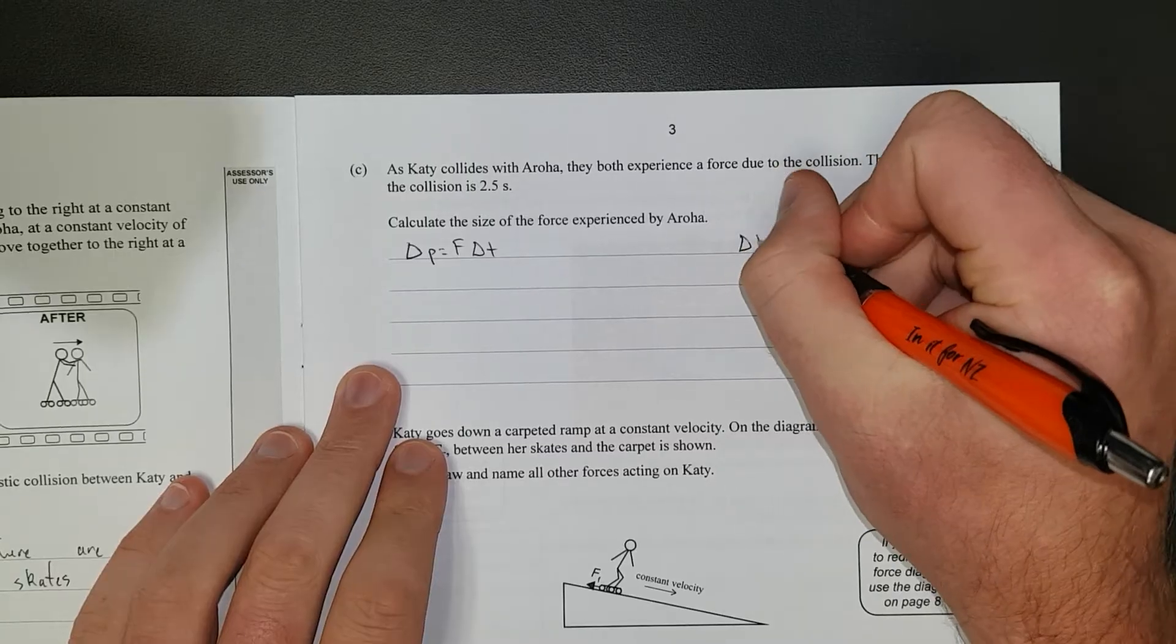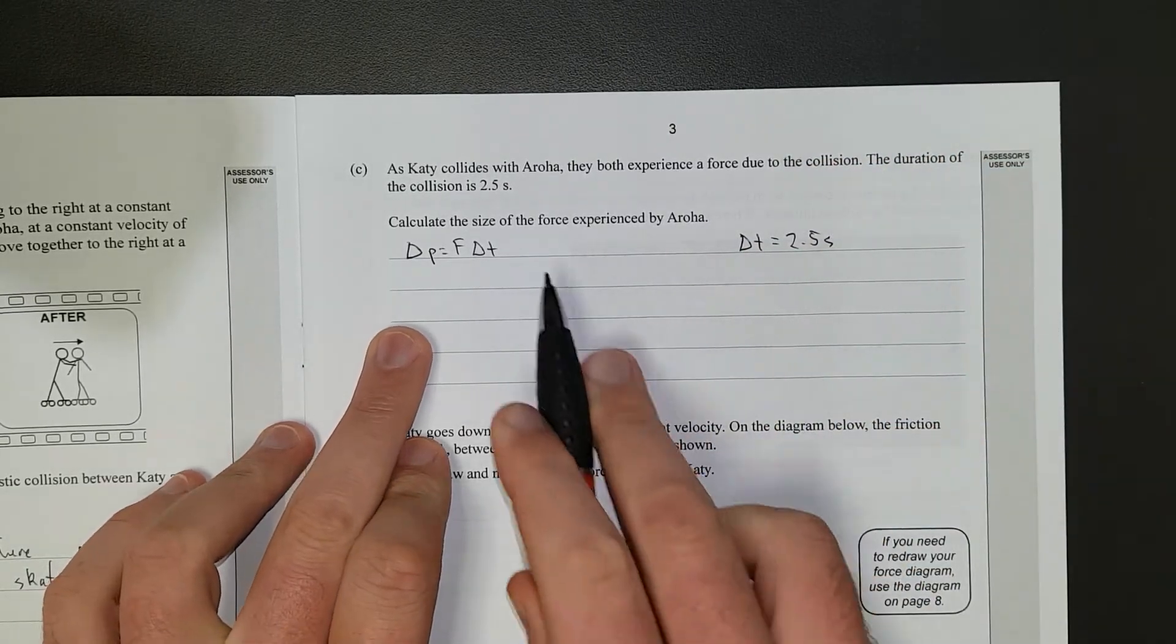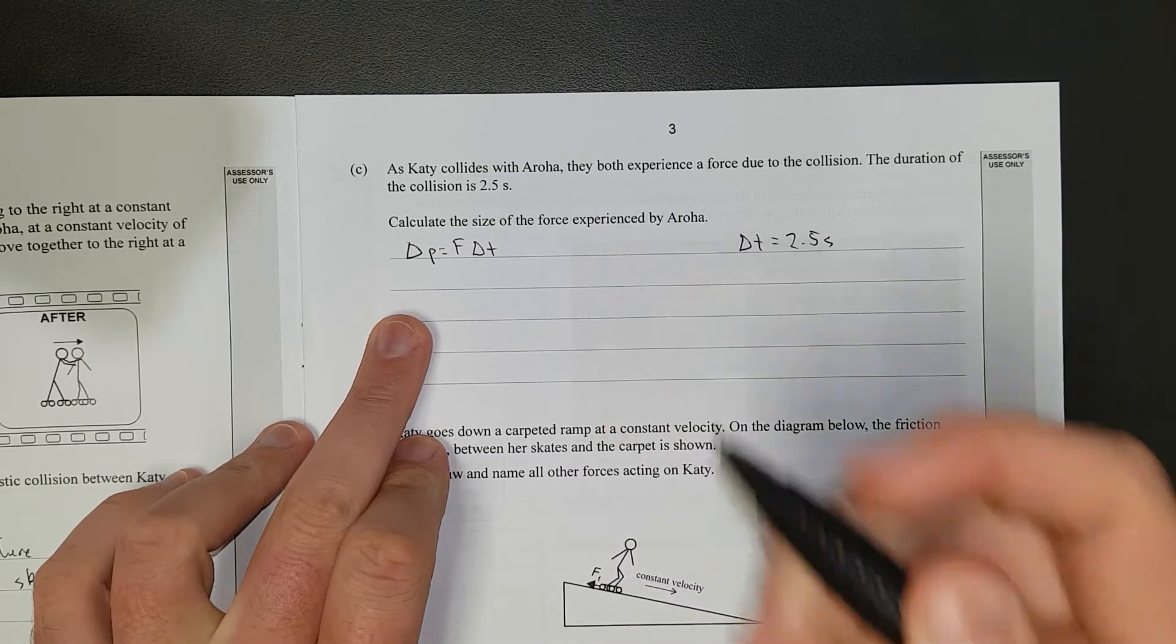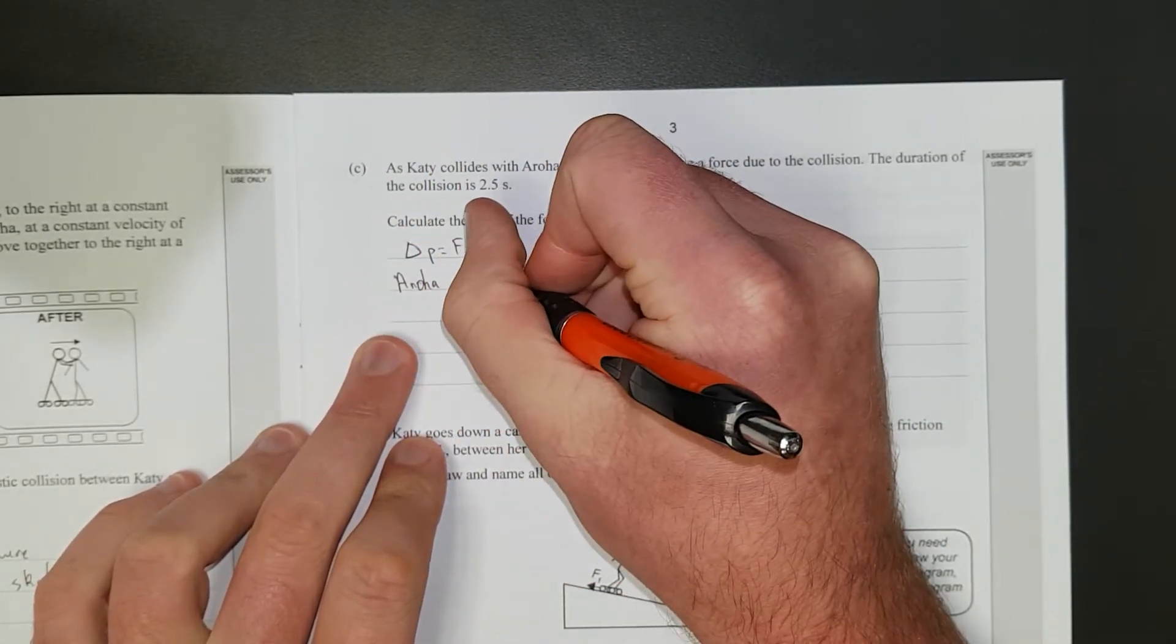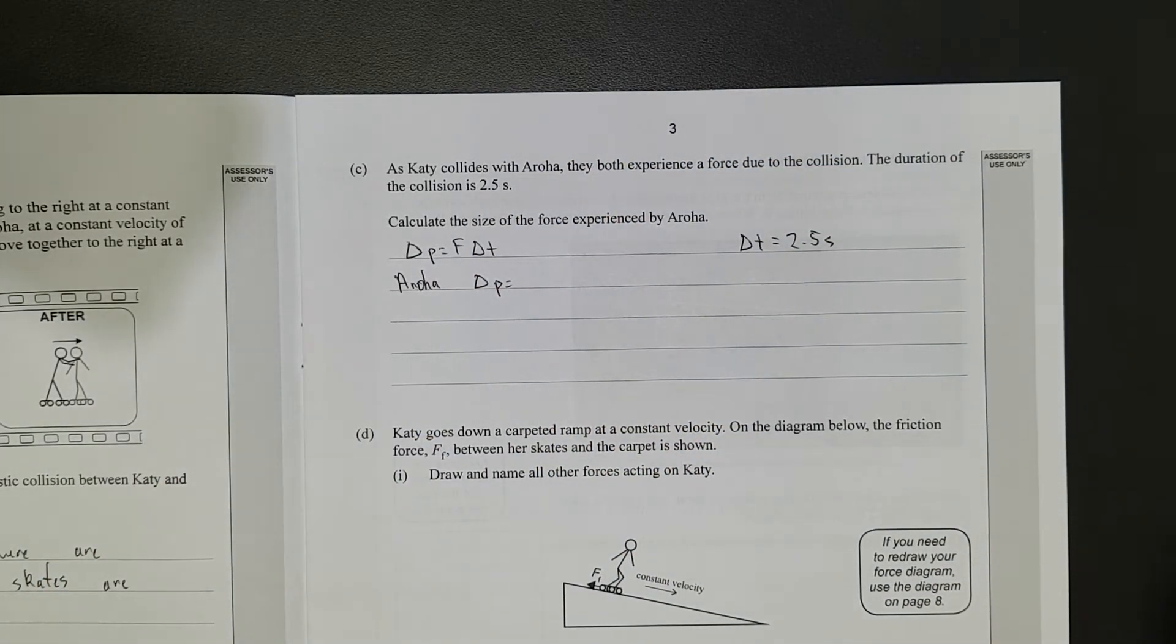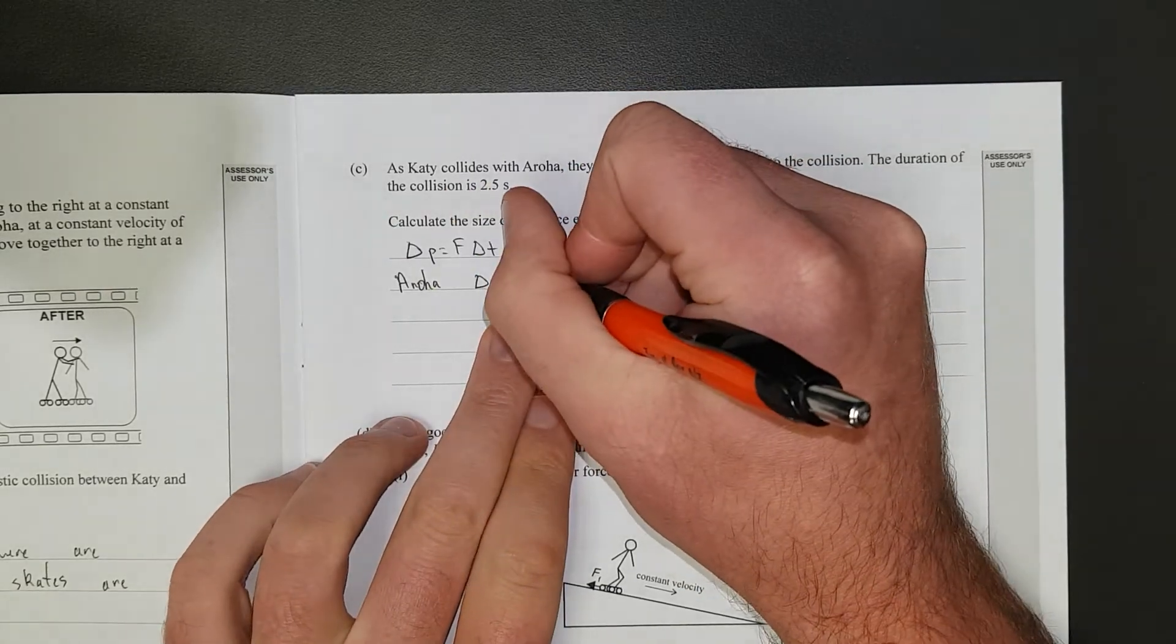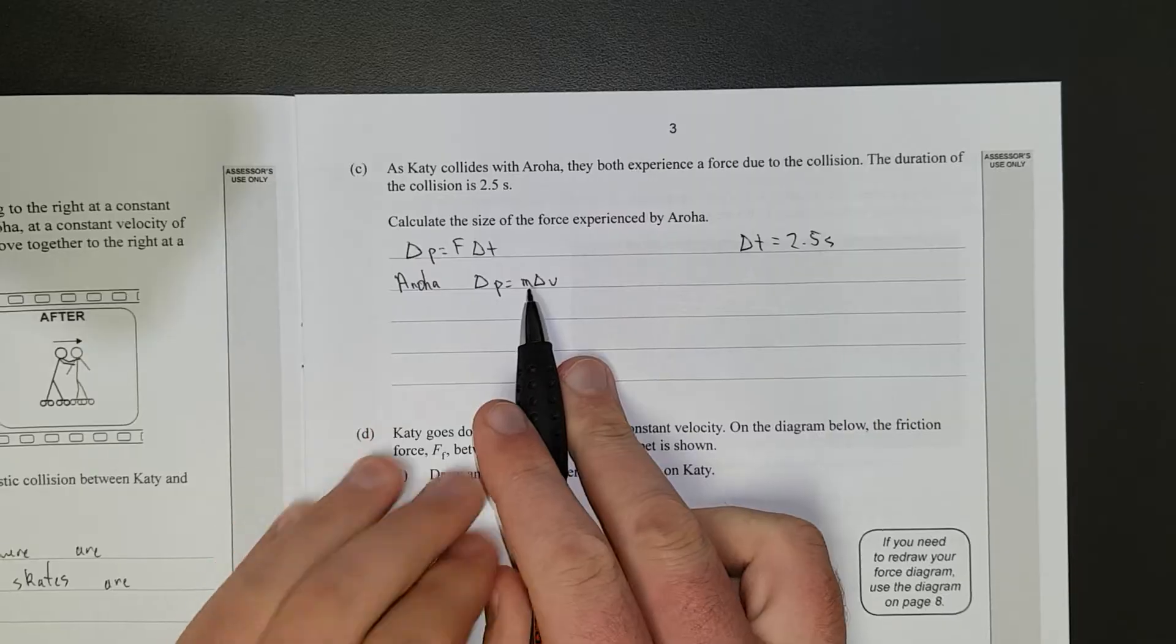We have the change of time, that's equal to 2.5 seconds. We want to find the force on Aroha, so we need to find Aroha's change in momentum, which is, there's a few ways to do this. You can go the initial minus the final, yada, yada, yada, or you can do it the quick and dirty way, which is just go, in order to change your momentum, you'll either need to change your mass or change your velocity.